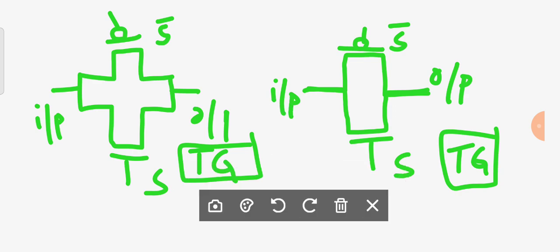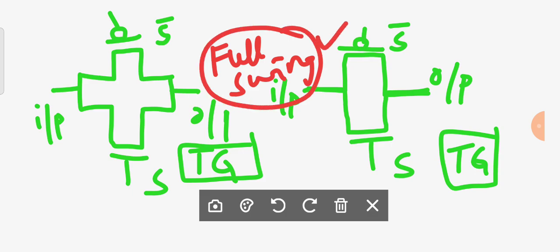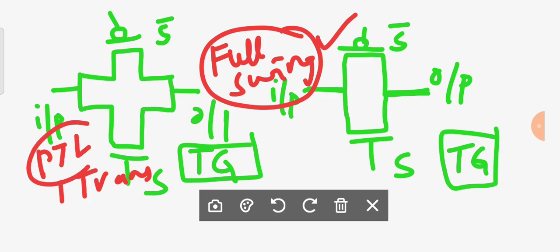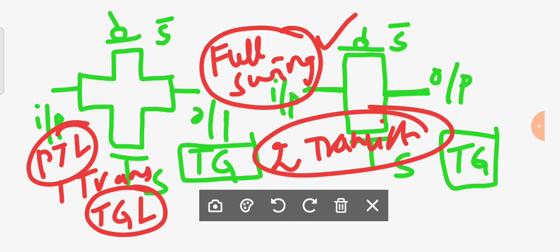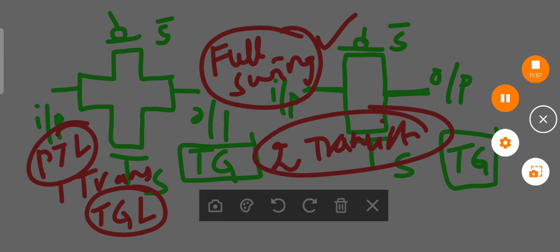The advantage of transmission gate logic is that there is full swing. The drawback compared to pass transistor logic is that in pass transistor logic you use only one transistor, whereas in transmission gate logic you need two transistors. In the next class, we will see how to implement some combination and sequential circuits using switch logic. Thank you very much. Have a nice day. If you have any queries, please comment.